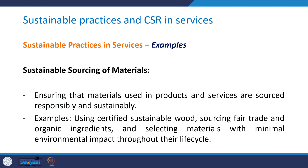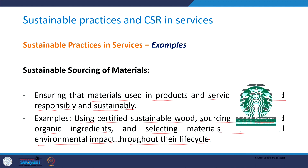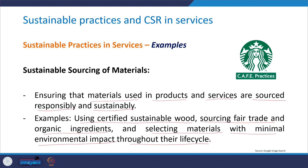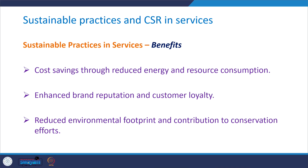The next sustainable practice involves sustainable sourcing of materials — ensuring that materials used in products and services are sourced responsibly and sustainably. Activities include using certified sustainable wood, sourcing fair trade and organic ingredients, and selecting materials with minimal environmental impact throughout their life cycle. For example, Starbucks has a strong commitment to ethical sourcing practices for its coffee beans. They have implemented programs such as Coffee and Farmer Equity (CAFE Practices), which promote sustainable farming practices, fair wages, and community development among coffee farmers.